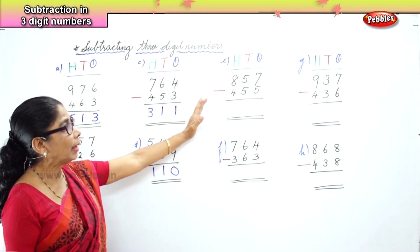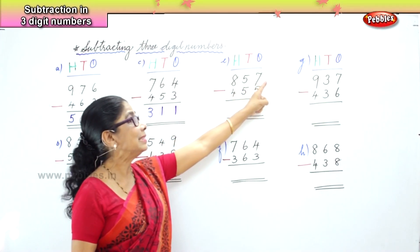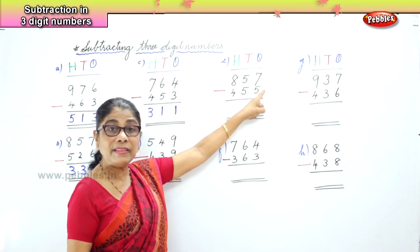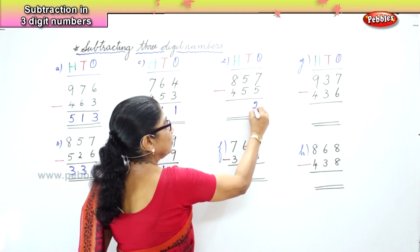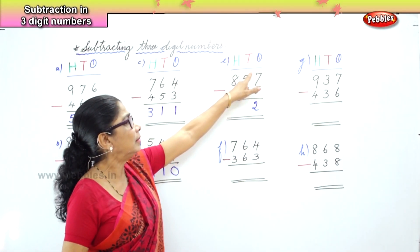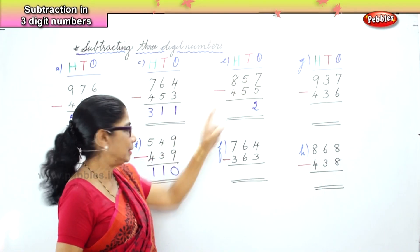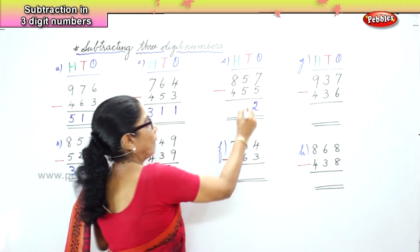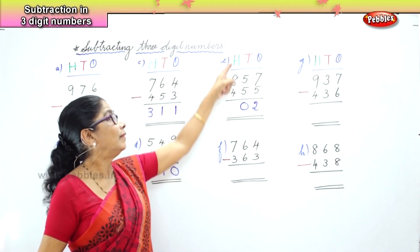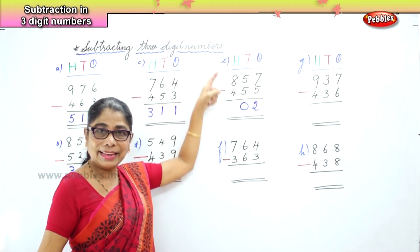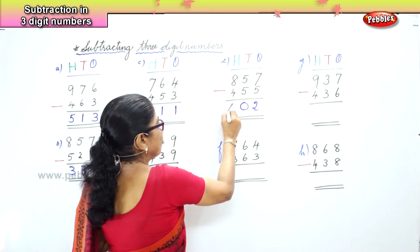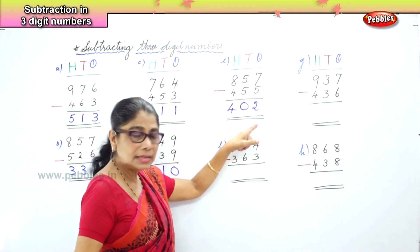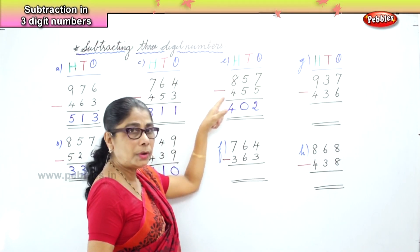Now let's go to another sum. In the 1s place, we have 7 ones take away 5 ones. 7 minus 5 is 2. Next, we have 5 tens minus 5 tens. 5 take away 5 is 0. Then we have 800 minus 400. 8 minus 4 is 4. The answer is 402.